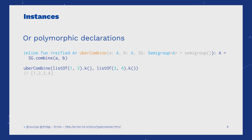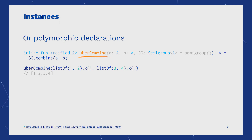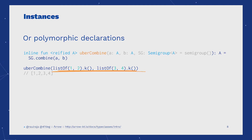That means they can operate over many data types. In this case, we have defined an uberCombine operation that is entirely polymorphic, and we can use it with the concrete data type ListK because we've provided an instance for it.